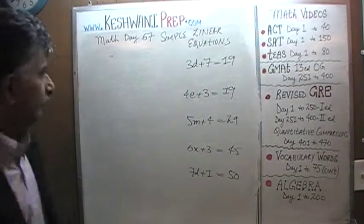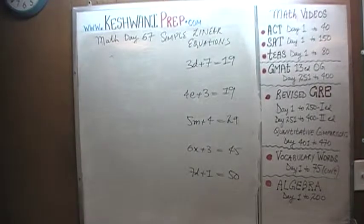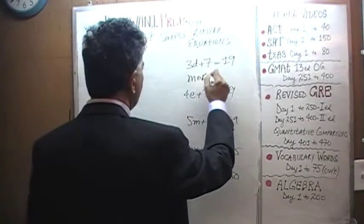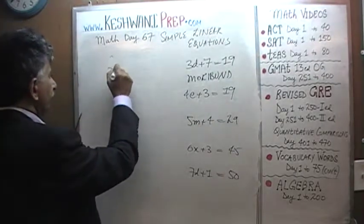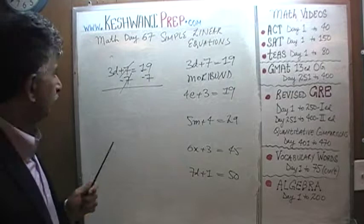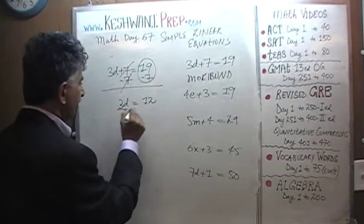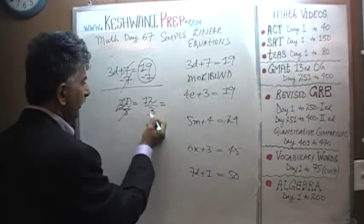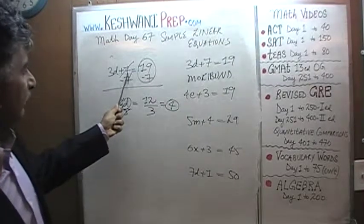Let me change the marker — this one doesn't have much life left in it. 3d plus 7 equals 19. Let's subtract 7 from both sides — 7 gets knocked out. 3d equals 19 minus 7, which is 12. Divide both sides by 3 — 3 gets cancelled out — and d equals 12 divided by 3, which is 4. Put it back: 3 times 4 is 12, and 12 plus 7 is 19 — that's exactly what we have here.